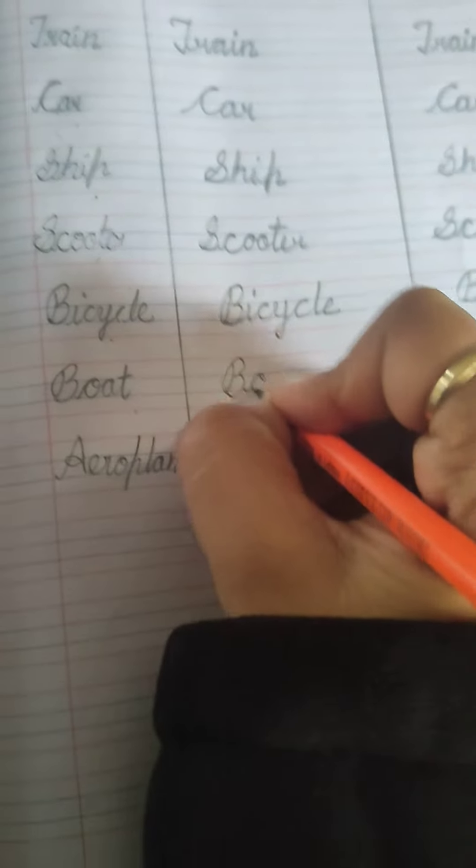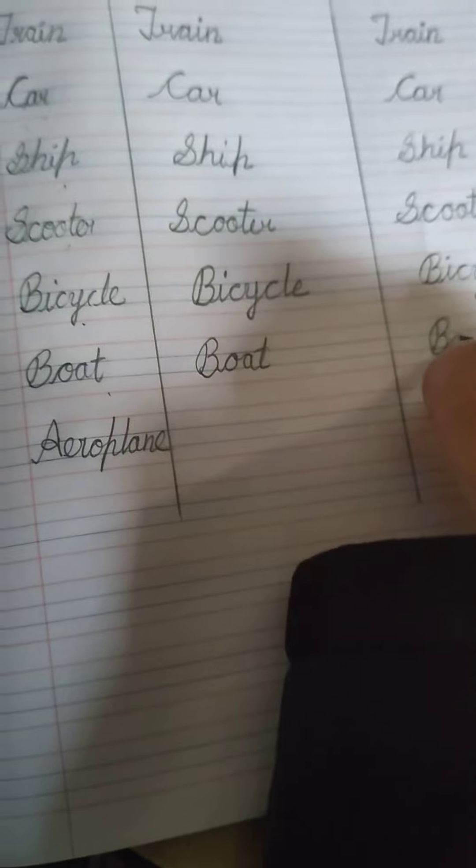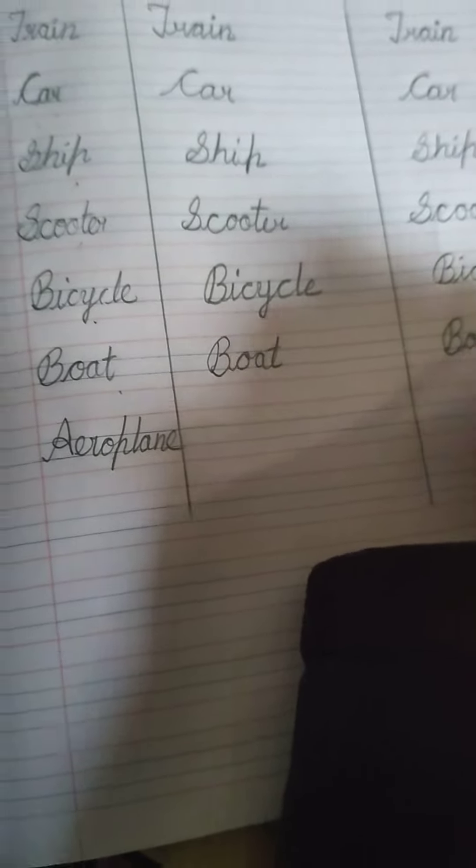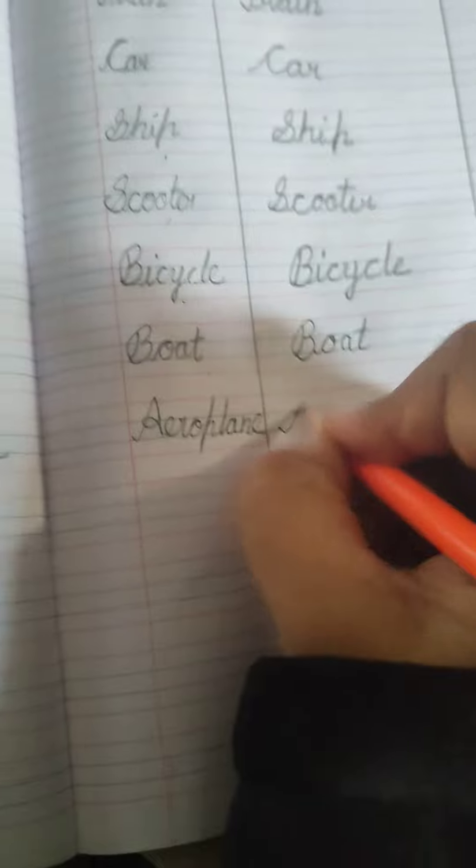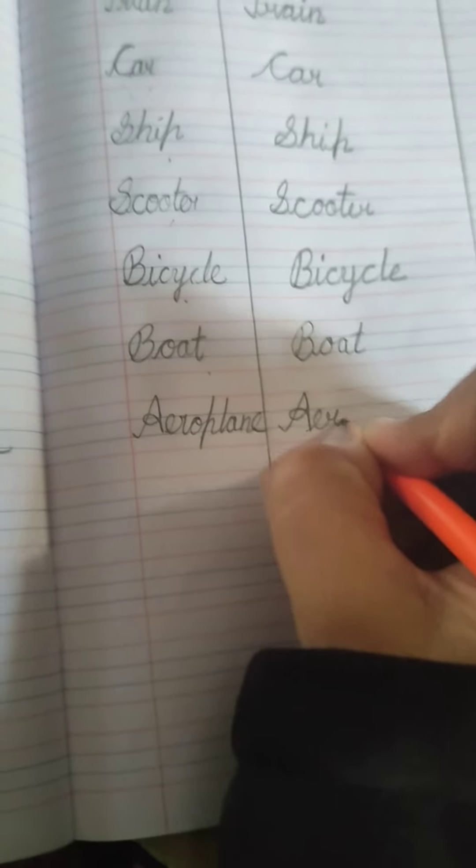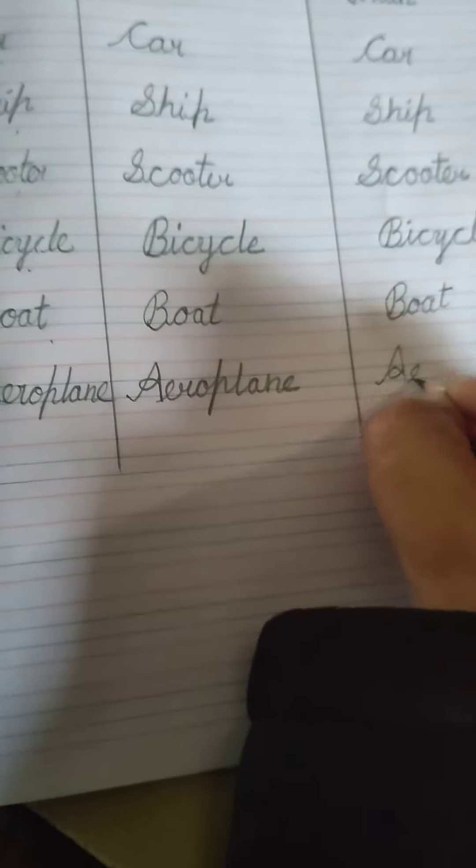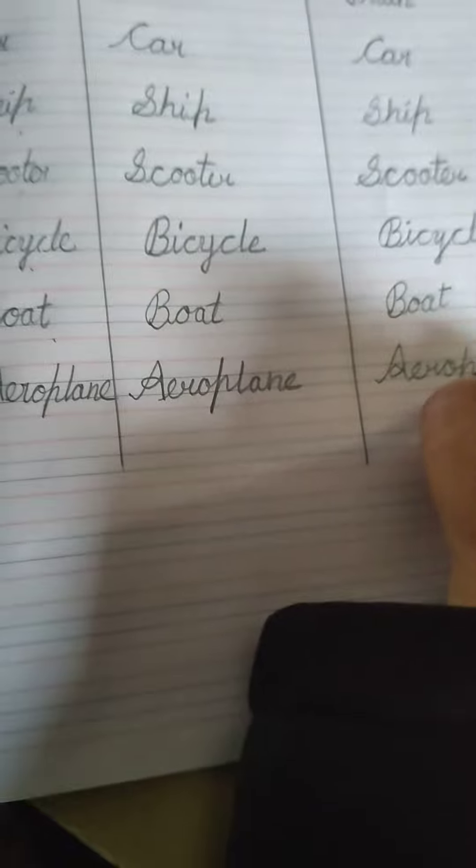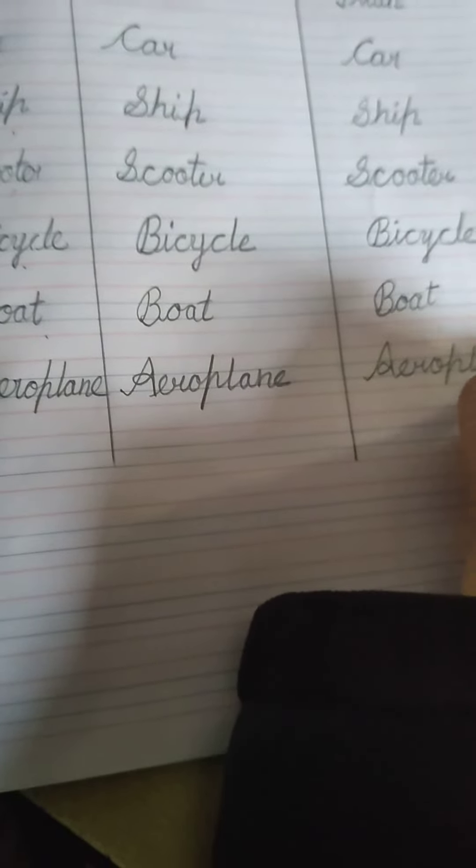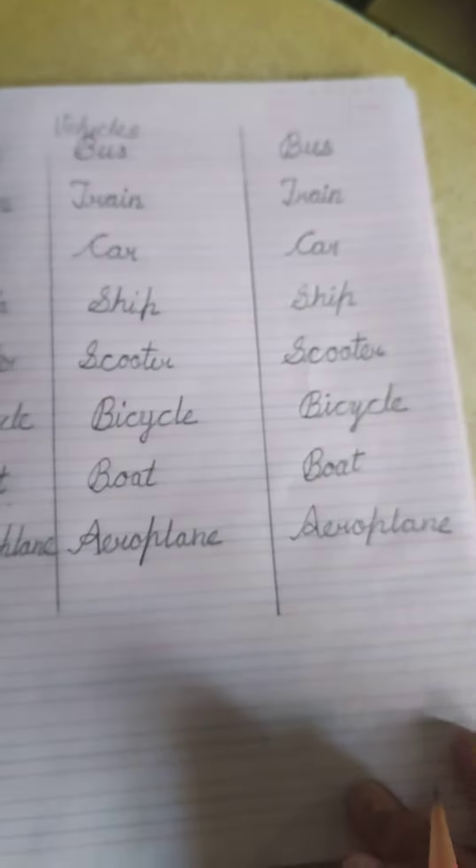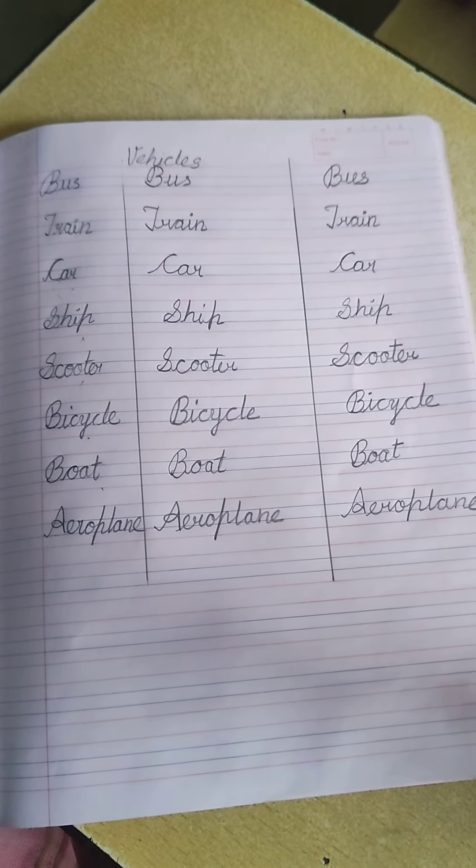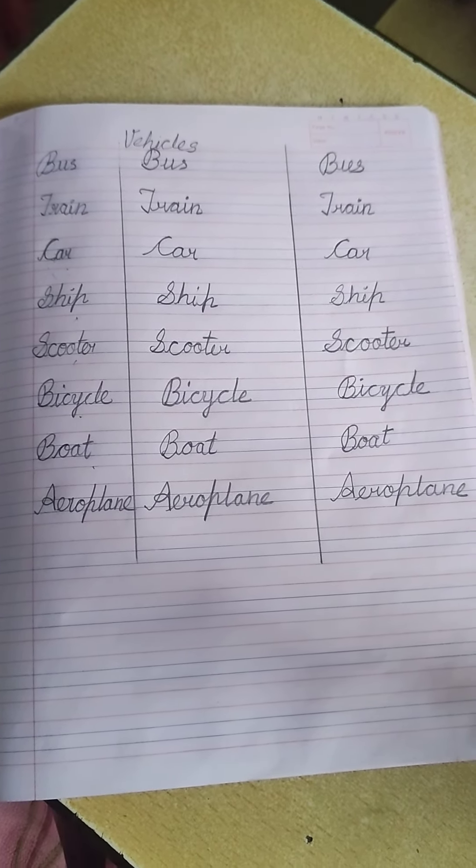BOAT, B-O-A-T. AEROPLANE, A-E-R-O-P-L-A-N-E, AEROPLANE. Like this way, you need to write down in your notebook also. Thank you, Jai Swaminarayan.